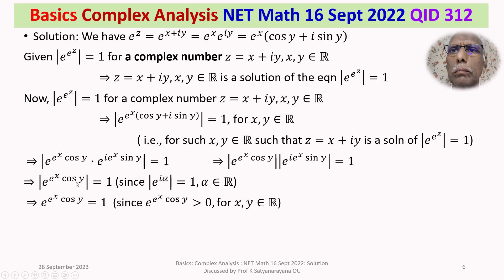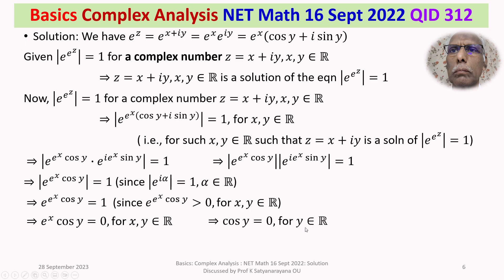Since e^(e^x·cos y) is positive for x, y ∈ ℝ, we can write e^(e^x·cos y) = 1. This means the exponent e^x · cos y must equal 0 for such x, y. Since e^x never vanishes for any value of x, this implies cos y = 0.